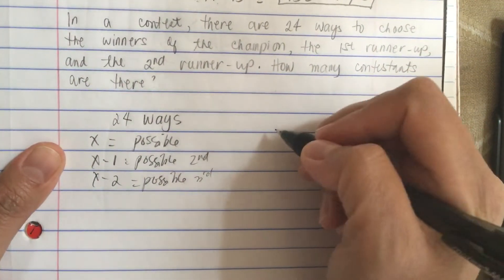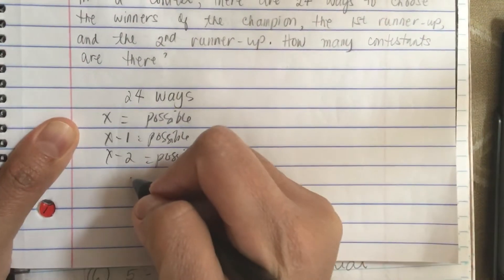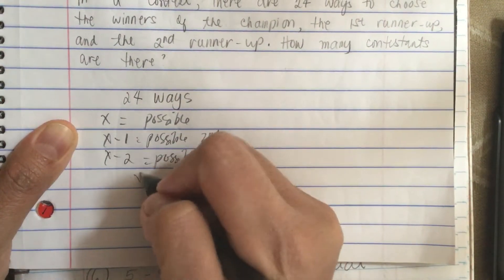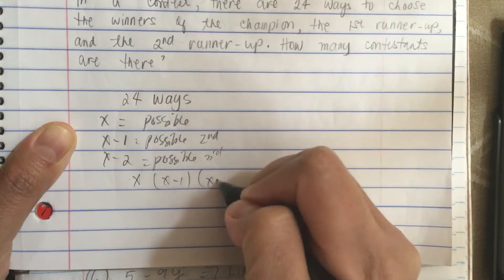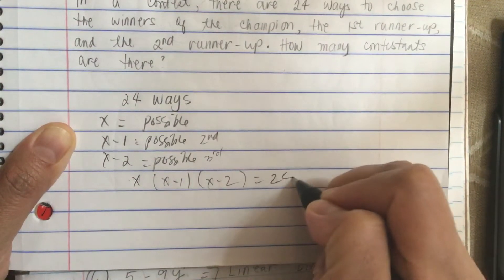So we get x times x minus 1 times x minus 2 is equal to 24.